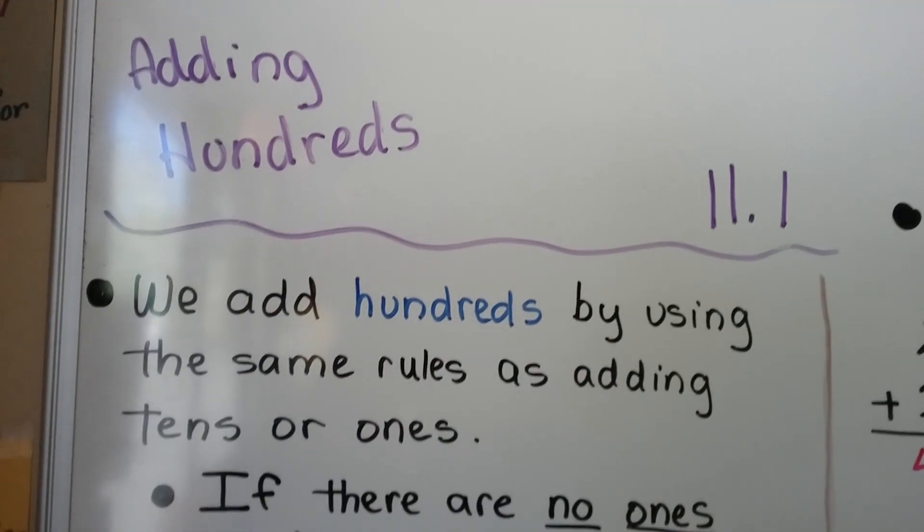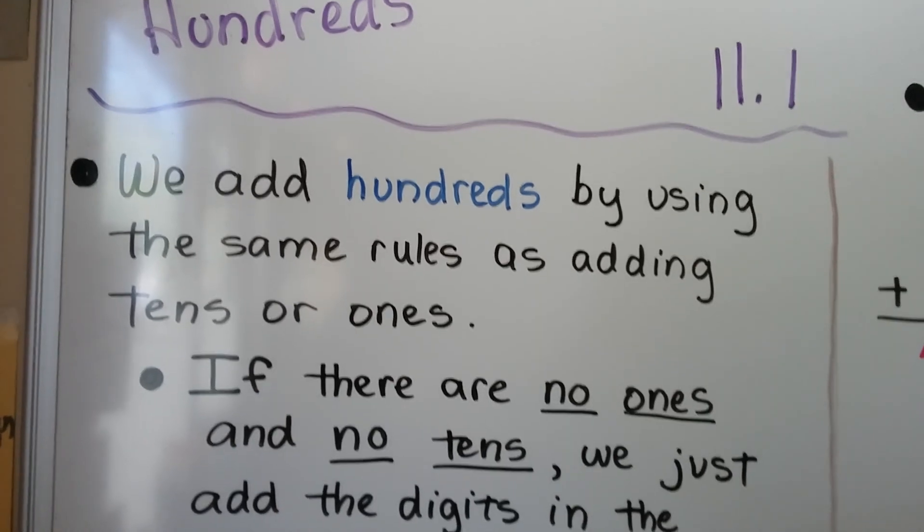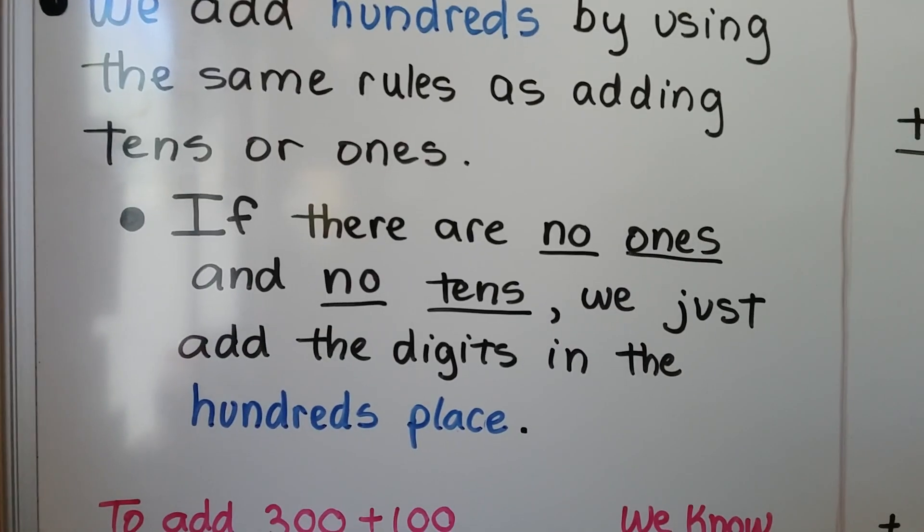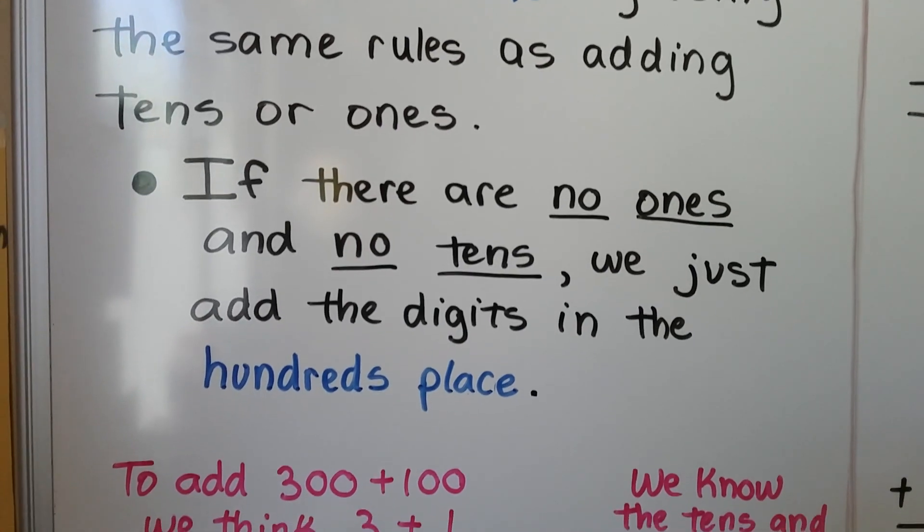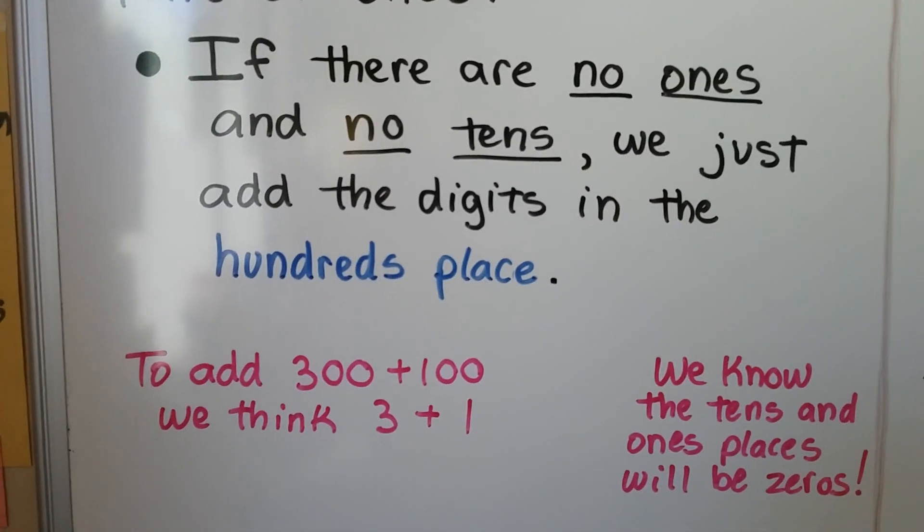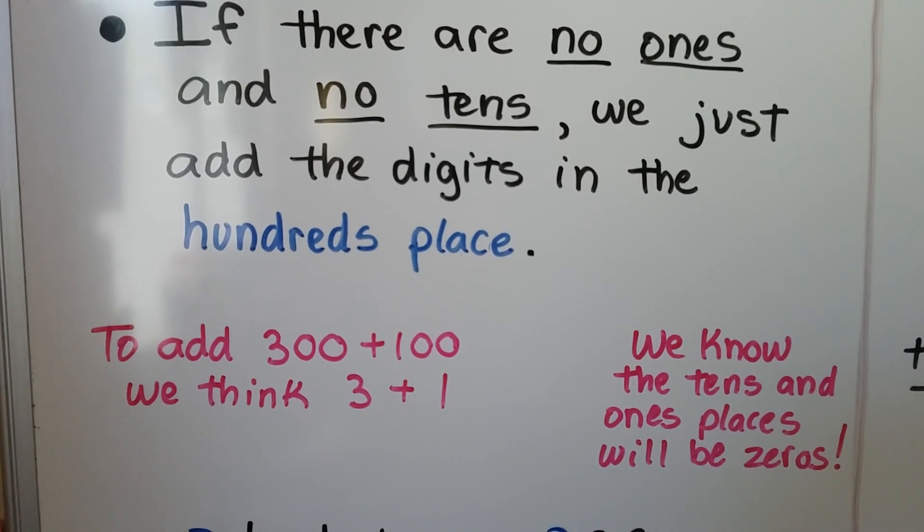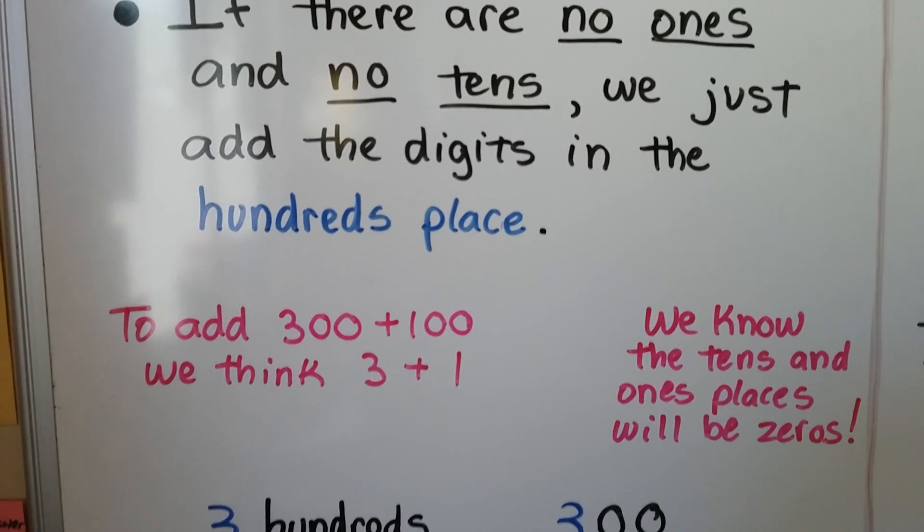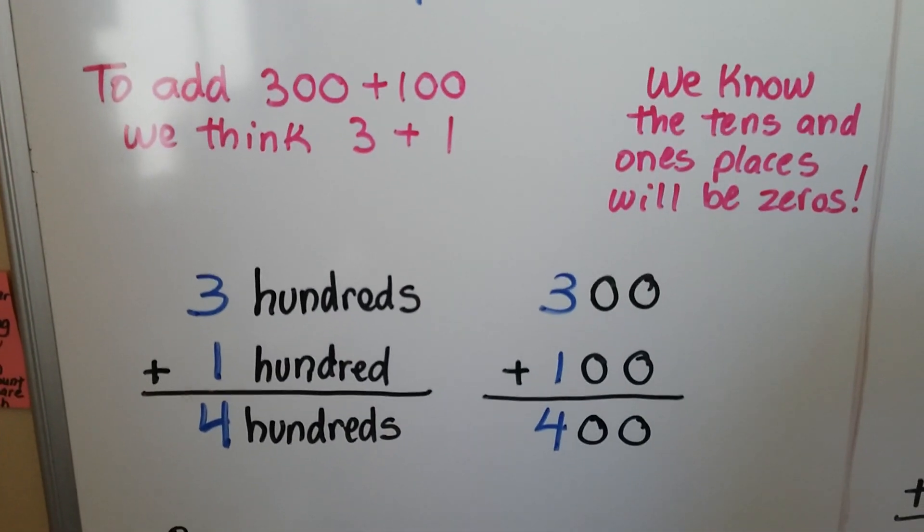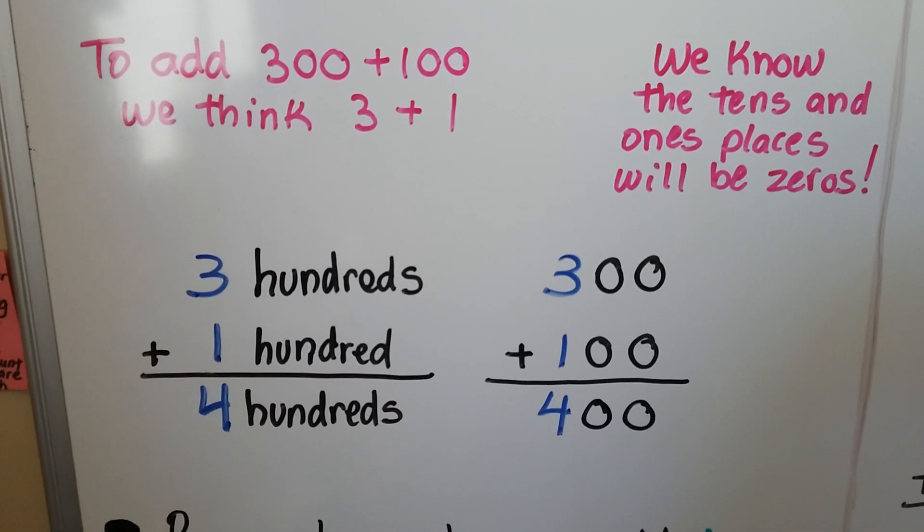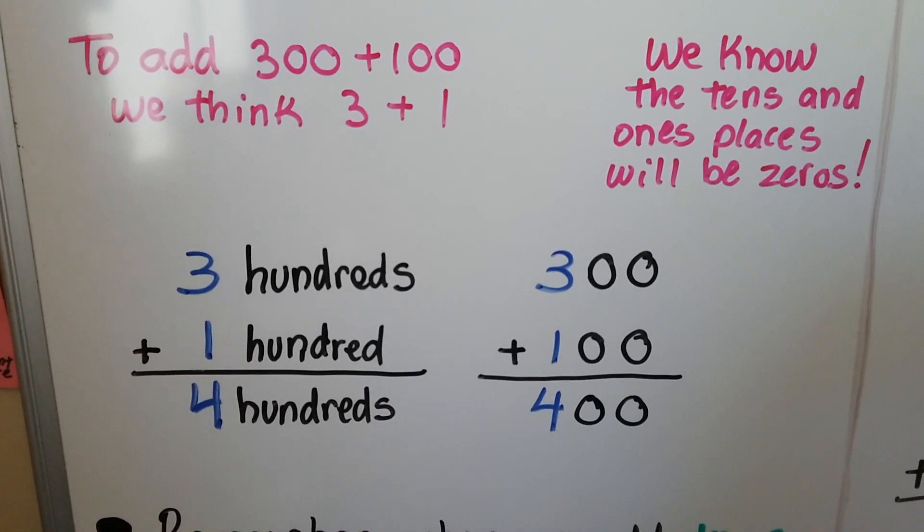We add hundreds by using the same rules as adding tens or ones. If there's no ones and no tens, we just add the digits in the hundreds place. To add 300 plus 100, we think 3 plus 1. We know the tens and ones places will be zeros. Three hundreds plus 100 equals four hundreds, because 3 plus 1 equals 4.